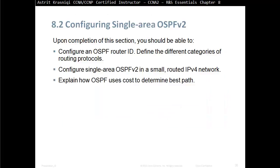Upon completion of this section, you should be able to configure an OSPF router ID, define the different categories of routing protocols, configure Single Area OSPF Version 2 in a small routed IPv4 network, and explain how OSPF uses cost to determine the best path.